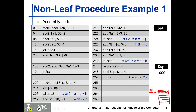Starting with the main function: we have four arguments — one, two, three, four — to pass to add4. Following the MIPS calling convention, we store one into a0, two into a1, three into a2, and four into a3. So a0 corresponds to g, a1 to h, a2 to i, and a3 to j.